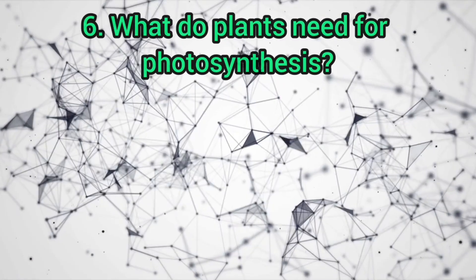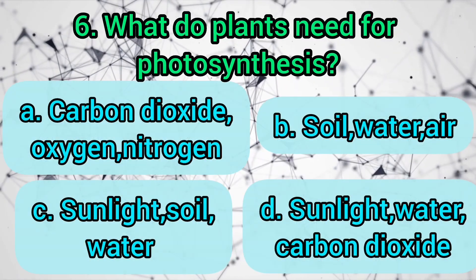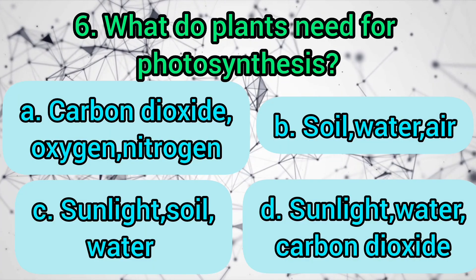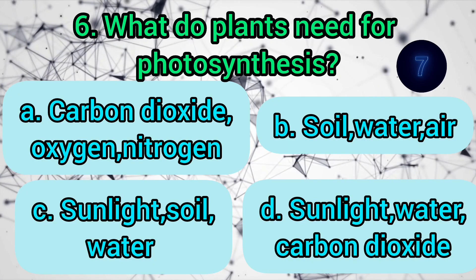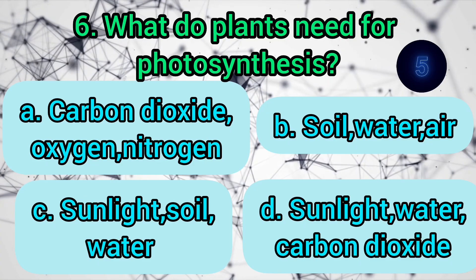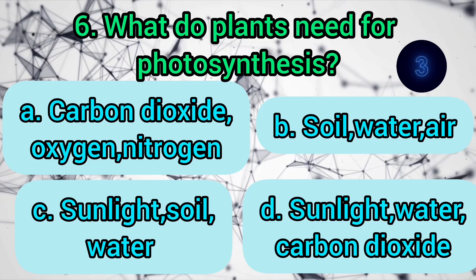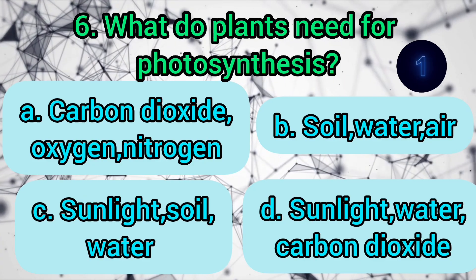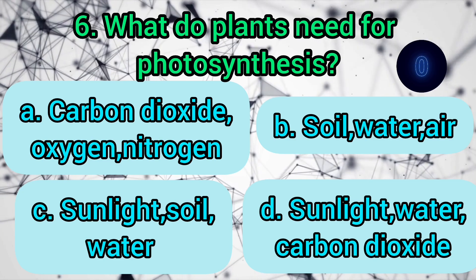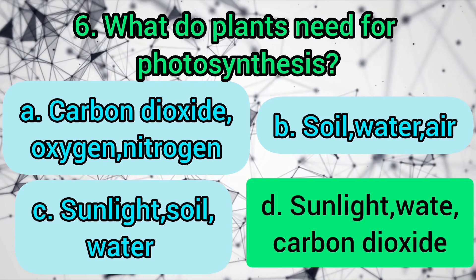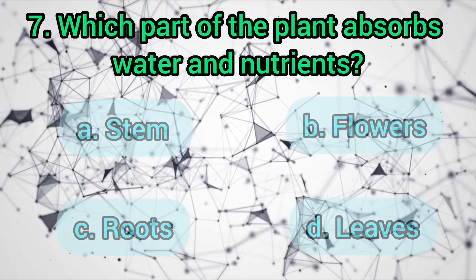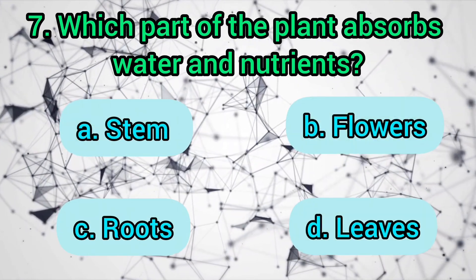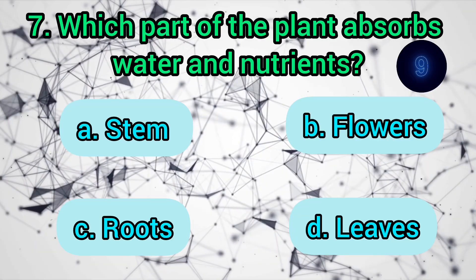What do plants need for photosynthesis? Carbon dioxide, oxygen, nitrogen, or soil? Water, air, sunlight, soil, water, sunlight, water and carbon dioxide? The answer is: sunlight, water, and carbon dioxide.